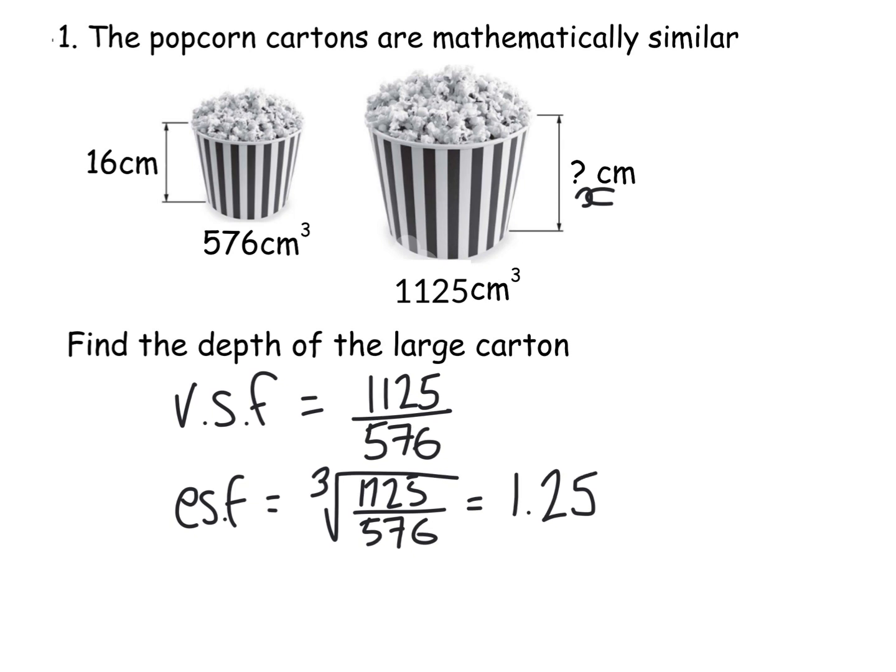Now the reason I'm cube rooting it is, remember, working the normal way, you would get your scale factor, you would cube it and you would times it by the corresponding volume. So working backwards, we'll get a volume scale factor cube root. It's 1.25. So my missing length is just your enlargement scale factor of 1.25 times 16. And when you do that, you get the answer of 20 centimetres again.